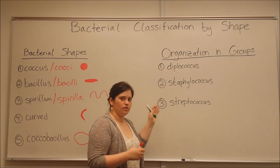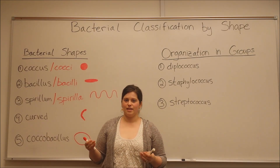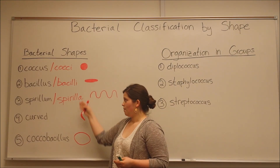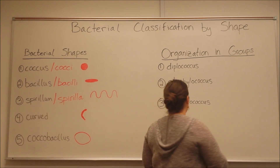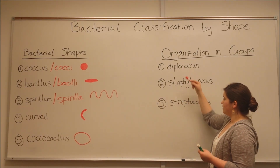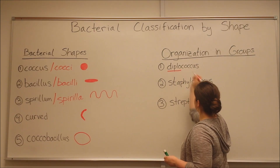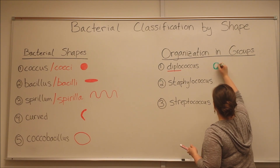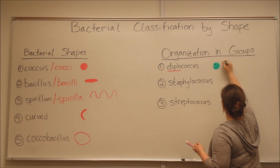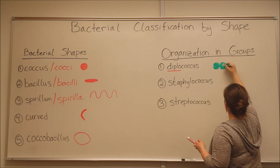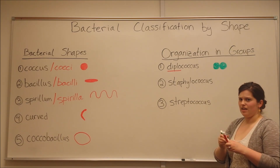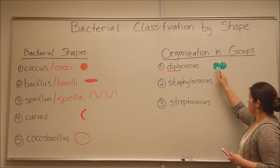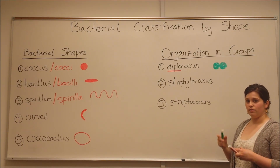We're going to use the cocci bacteria as an example, but these types of organization can be used by various other bacteria as well. With Diplococcus — think 'diplo,' meaning two — these are when two cocci are in pairs. They clump together in pairs, and this is one way to recognize a Diplococcus type species under a microscope: you look for two spherical cells joined together.